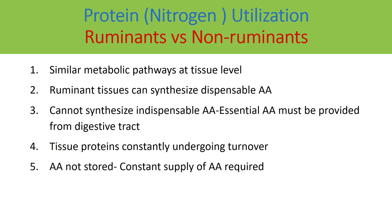Protein and nitrogen utilization in ruminants versus non-ruminants. Looking at the similarities, the metabolic pathways followed by protein products, synthesis of different amino acids, and synthesis of protein at the tissue level are similar in both ruminant and non-ruminant animals. Simply put, metabolic pathways at the tissue level are the same in both types of animals.